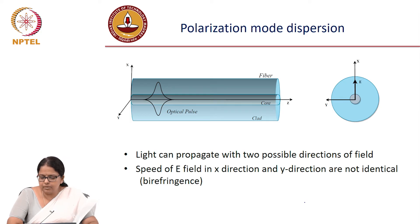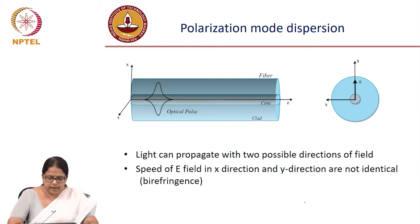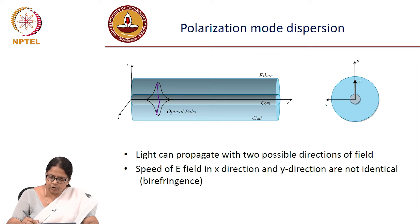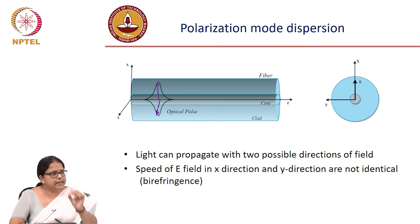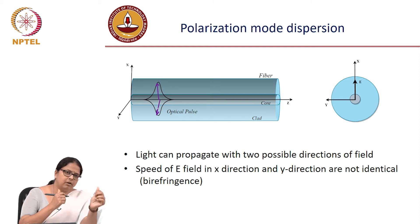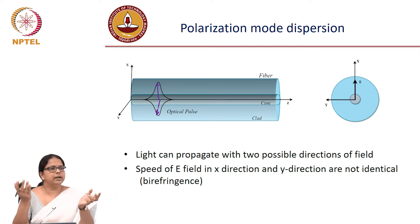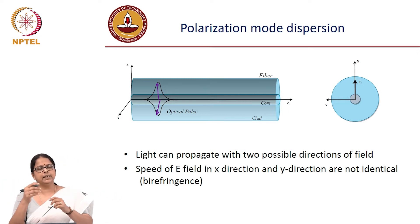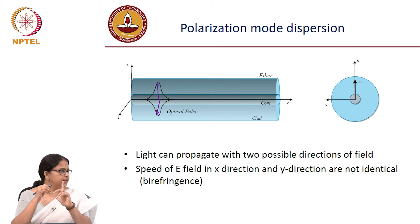Polarization mode dispersion is a kind of dispersion where pulses are propagating in two orthogonal polarizations. When you send a pulse through a fiber, you are exciting all possible polarizations, and any polarization can be expressed as a linear combination of two orthogonal polarizations.